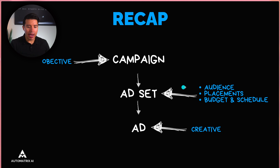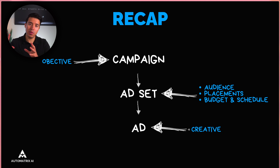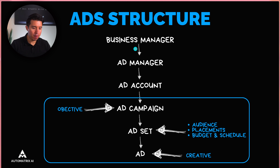As a recap: at the campaign level you set your objective — usually leads. At the ad set level you set your audience, placements, budget and schedule. With audience you can let Meta do the work or define your targeting. At the ad level you set your primary text, headlines, select your lead form, and upload your creative. You can have multiple ad sets per campaign and multiple ads per ad set.